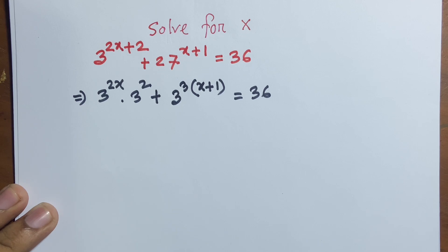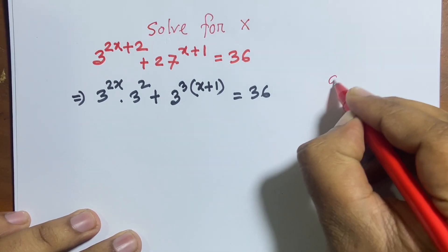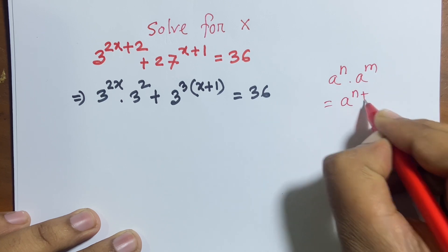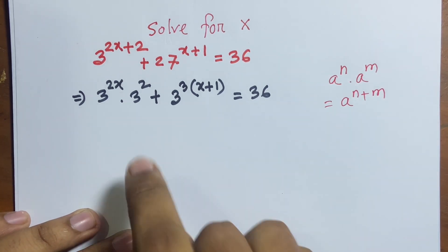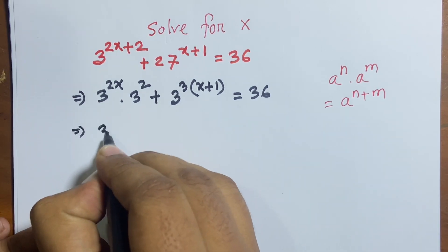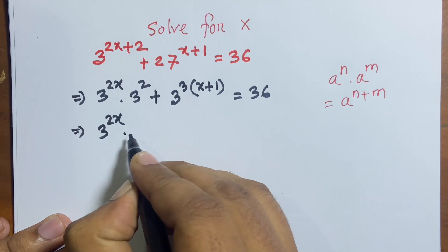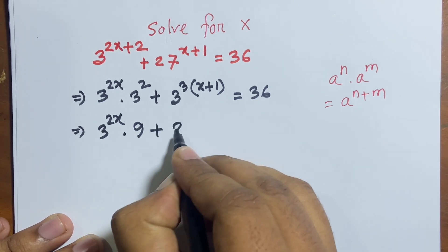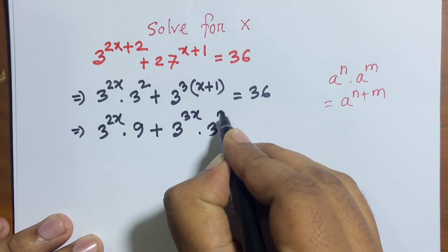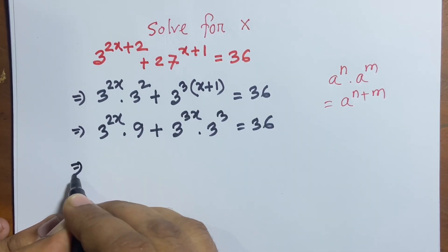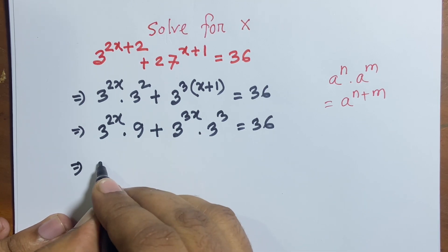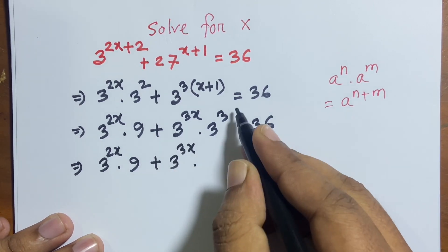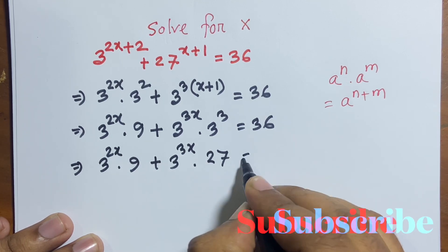I follow this formula: we know that a to the power n times a to the power m equals a to the power (n+m). Applying this formula, I can say 3 power 2x times 9 plus 3 power 3x times 3 cubed equals 36. And 3 cubed is equal to 27, so 3 power 2x times 9 plus 3 power 3x times 27 equals 36.